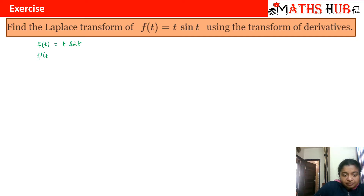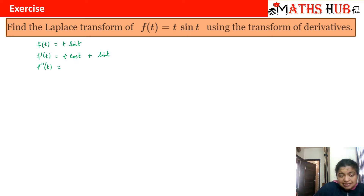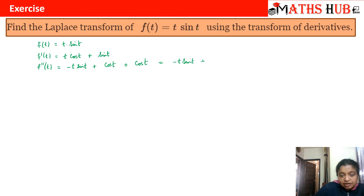Applying the product rule: f'(t) = t·cos t + sin t. Now we also need f''(t), because when we apply Laplace to f'(t), we still get t·cos t, which has no direct known Laplace form. So computing f''(t): derivative of t·cos t gives −t·sin t + cos t, and derivative of sin t gives cos t. Therefore f''(t) = −t·sin t + 2·cos t.